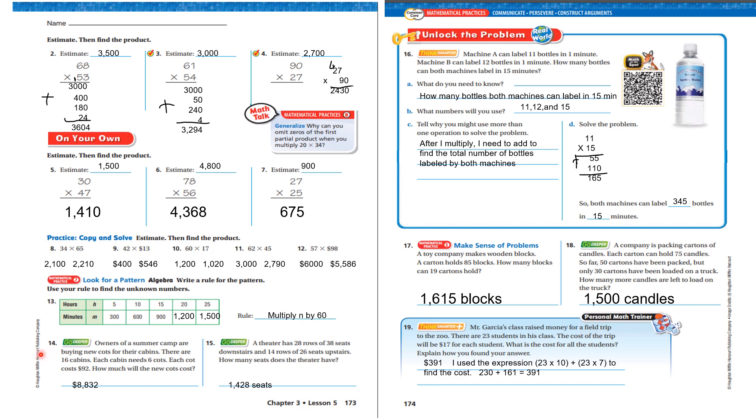The answer is 8,832. Owners of a summer camp are buying new cots for their cabin. There are 16 cabins. Each cabin needs six cots. The cots cost $92. How much will the new cots cost? Well, you take 16 times six. Find that total. Then take the six times 92. Find that total. Add it together. $8,832.